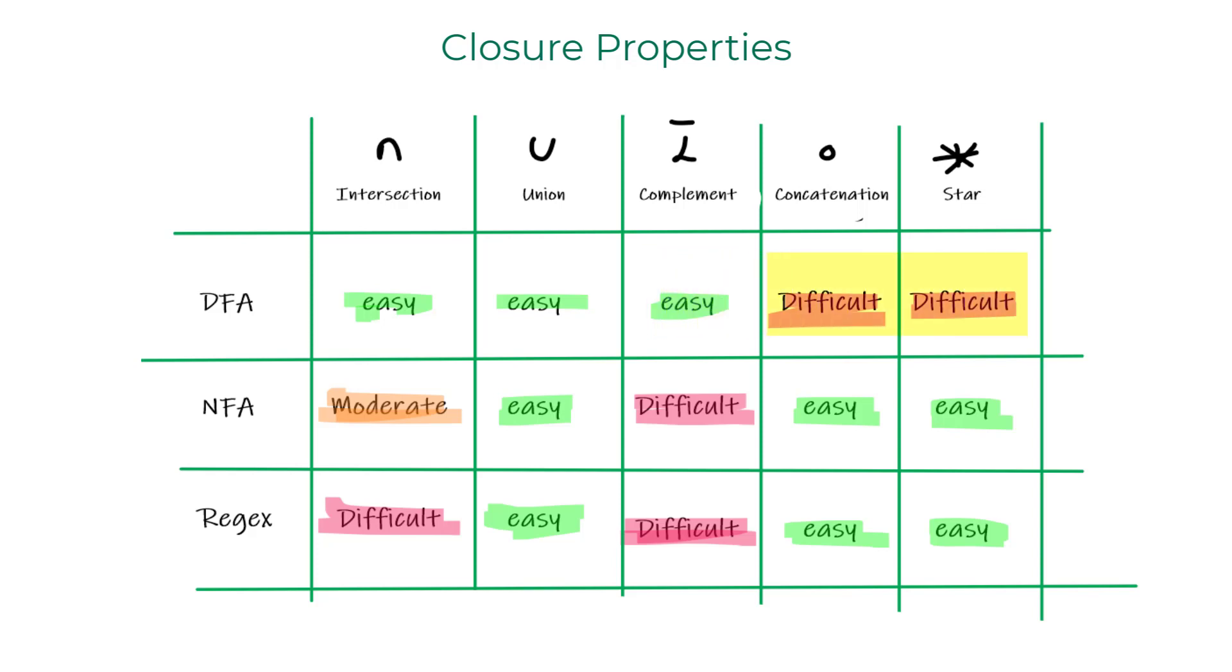Finding concatenation language of two DFAs is a hard task, and so is the star operator on the language of a DFA. You can give that a thought. You would see the complications that would arise with it.